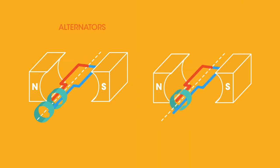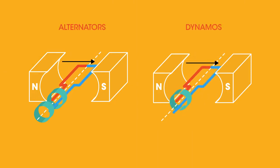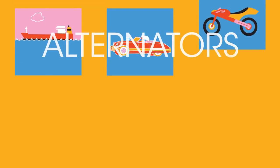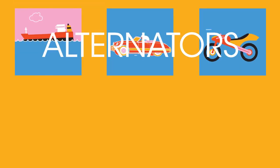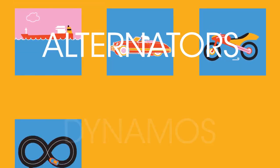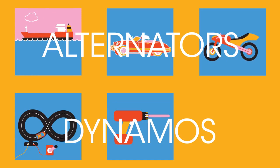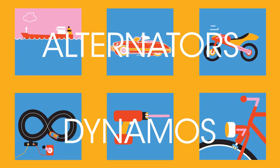This video is all about alternators and dynamos. They both use magnetic fields to produce electric power. Ships, cars and motorbikes use alternators to charge their batteries. Toys, power tools and bicycle lights use dynamos.